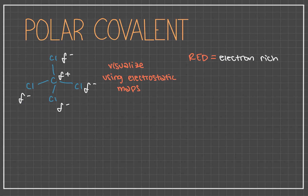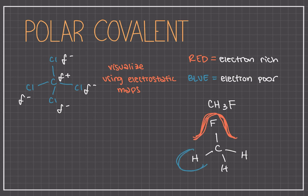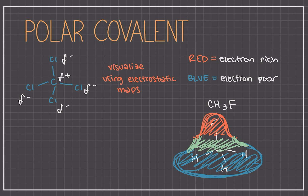A really important tool with polar covalent bonding is we can visualize where the electrons are based on an electrostatic map, where red represents the electron-rich regions and blue represents the electron-poor regions. So if we have CH3F, for example, we know that fluorine, being the most electronegative atom, is going to pull the electrons the most — so that is going to be our red region. Hydrogen is one of the least electronegative atoms, carbon being more electronegative than hydrogen, so that's going to be the electron-poor region. Carbon in between is going to be neither electron-poor nor electron-rich, so we'll label that green.